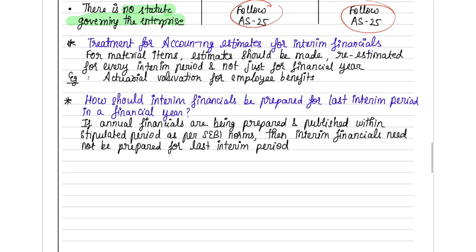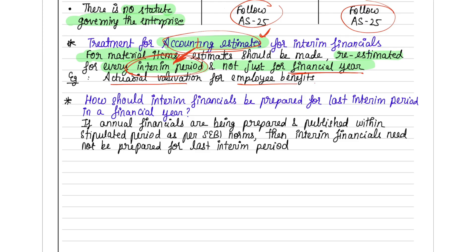Regarding treatment for accounting estimates: for material items, estimates should be made and re-estimated for every interim period, not just at the financial year-end. For example, actuarial valuation for employee benefits should not be done only at year-end — it should be done at every interim period end as well.